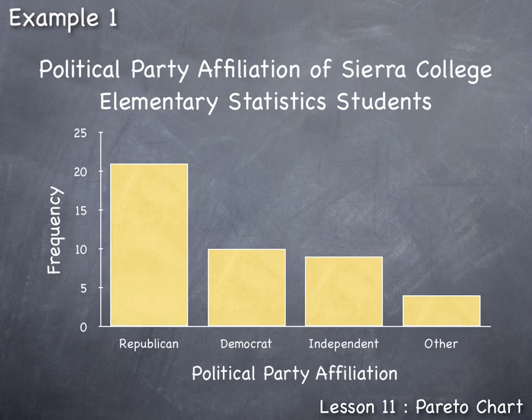Here is our completed Pareto chart. When describing the results, you might be tempted to say the shape is positively skewed — but this should not be done with qualitative data at the nominal level of measurement. The order of the bars was based on frequency, not actual data values, so there is no real order to political party affiliation. Any apparent shape cannot be described using the special language we use for distributions.